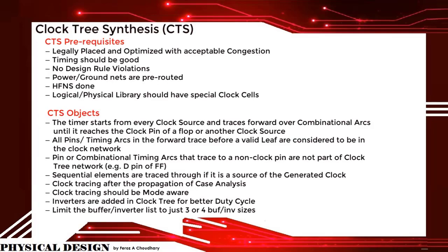CTS prerequisites: the design should be legally placed and optimized with acceptable congestion; timing should be good; no design rule violations; power ground nets are pre-routed; high fanout net synthesis is done; and the library should have special clock cells. CTS objects: the timer starts from every clock source and traces forward over combinational arcs until it reaches a clock pin of a flop or another clock source. Inverters are added in the clock tree for better duty cycle. Limit the buffer/inverter list to just 3 or 4 sizes.